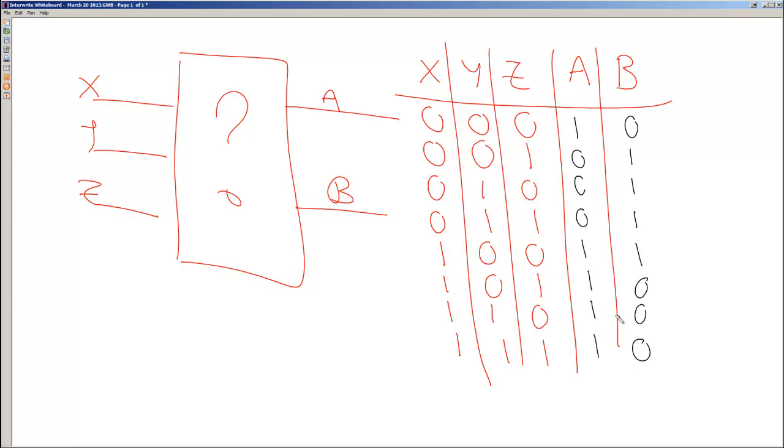And from that truth table we could then use it, knowing what different inputs needed to give us for outputs, we could build a circuit.